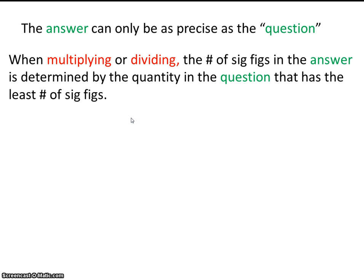So when multiplying or dividing, the number of sig figs in the answer is determined by the quantity in the question that has the least number of sig figs. It's a little bit confusing, I know. I think an example problem might help clear this up. So let's say we're multiplying 3.201 times 1.2. So our answer would be 3.8. So when I talk about the answer and the question, I'm referring to this as the answer, and I'm referring to these as the question.